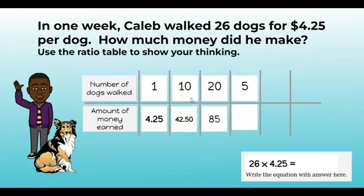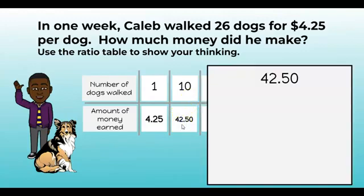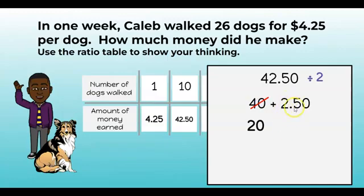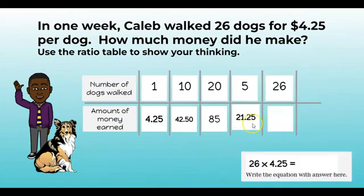Then I'm going to take half of ten to get five. We have forty-two dollars and fifty cents, which is pretty easy to divide in half: half of 40 is 20, half of 2 is 1, and half of 50 cents is 25 cents — one quarter — because it takes two quarters to make 50 cents. So we have twenty-one dollars and twenty-five cents for five dogs.